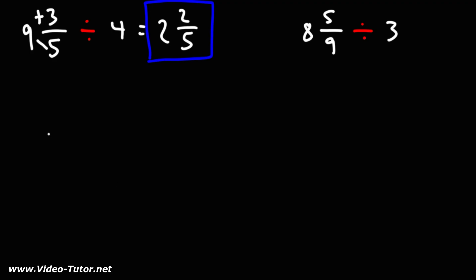So converting the mixed number to an improper fraction, let's begin by rewriting the denominator. 8 times 9 is 72 plus 5. That's 77. And 3, I'm going to write that as 3 over 1.